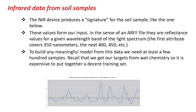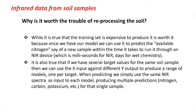Putting together a decent training set is expensive. But once you've built your model from 50 to 100 samples, when a farmer brings in a new soil sample and wants to know the available nitrogen, you just run the NIR spectra for that new sample through the model and it produces an estimate of Y. Instead of days for wet chemistry, we're talking milliseconds for the NIR device to produce the signature and run it through the model to get the estimate.